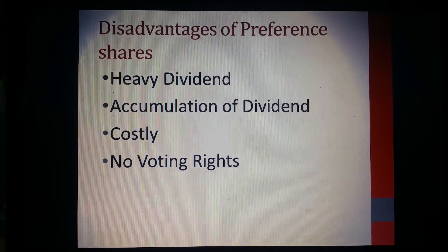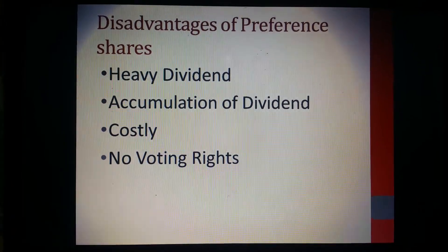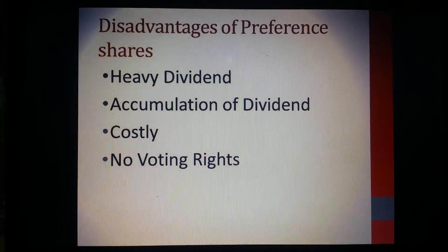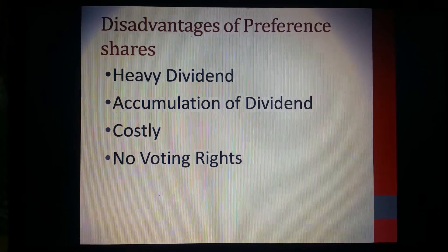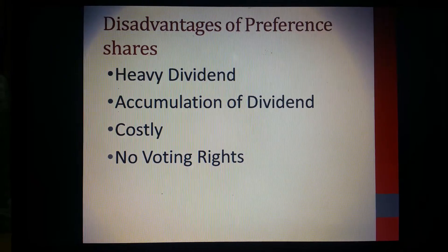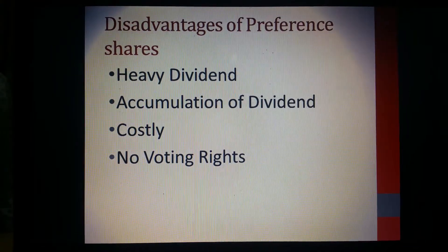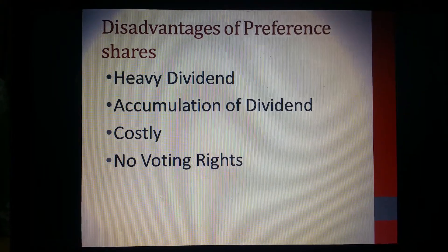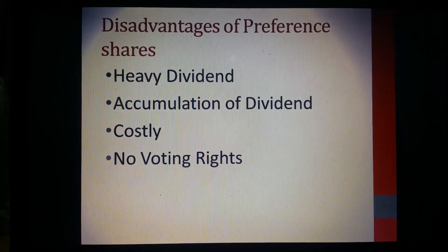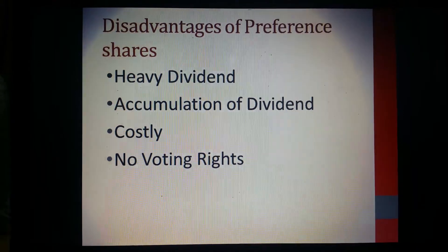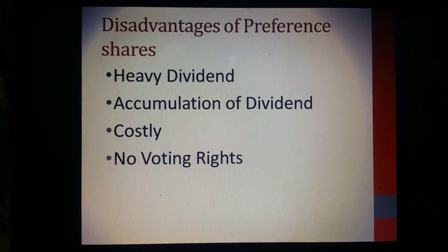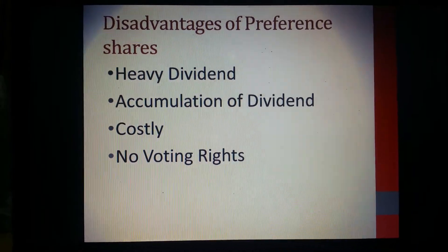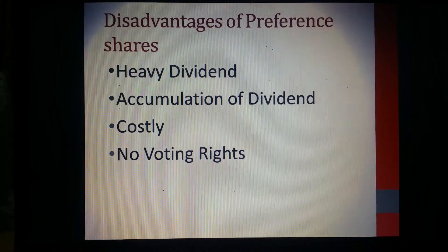Another disadvantage is accumulation of dividend. In the case of cumulative preference shares, if the company does not make profits in any year, the arrears of dividends will be carried forward to the succeeding years, leading to the problem of accumulation of dividend.